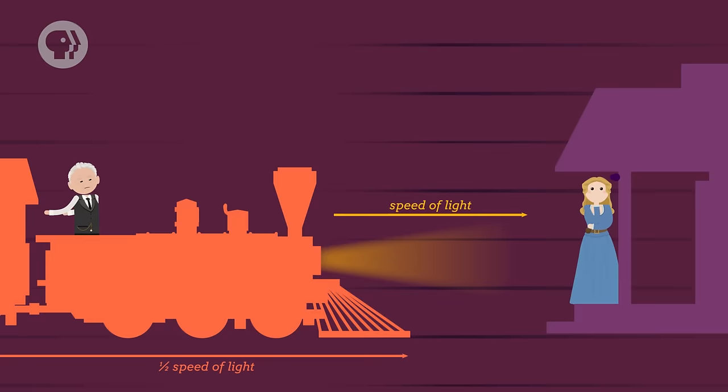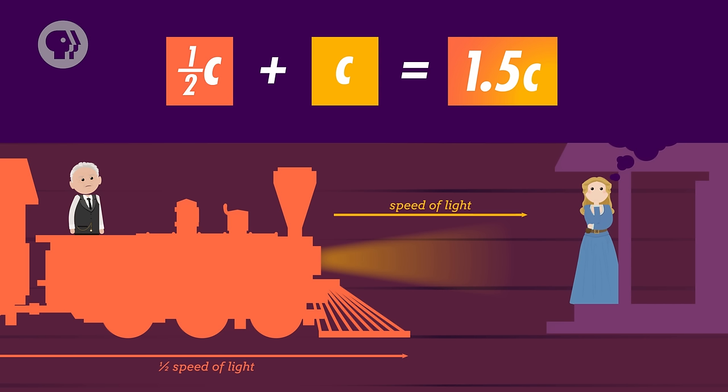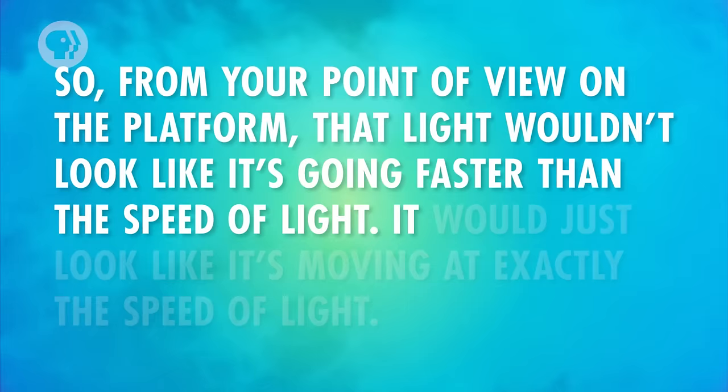You'd think that from your perspective on the platform, it would look like the light coming from the headlight was moving at one and a half times the speed of light, because it would have its own speed plus the speed of the train. But that's not true, because light always has to move at the same speed through a vacuum from any perspective. So from your point of view on the platform, that light wouldn't look like it's going faster than the speed of light — it would just look like it's moving at exactly the speed of light. As counter-intuitive and strange as that sounds, Special Relativity explains why.